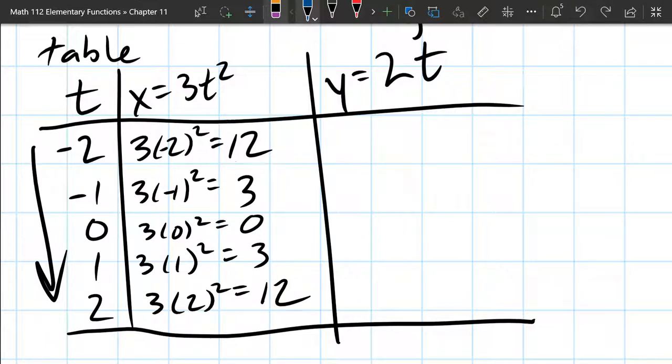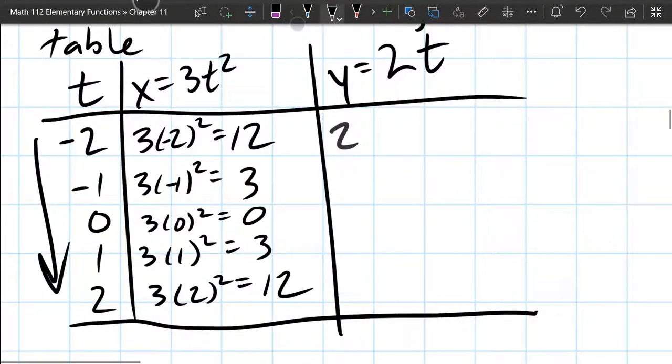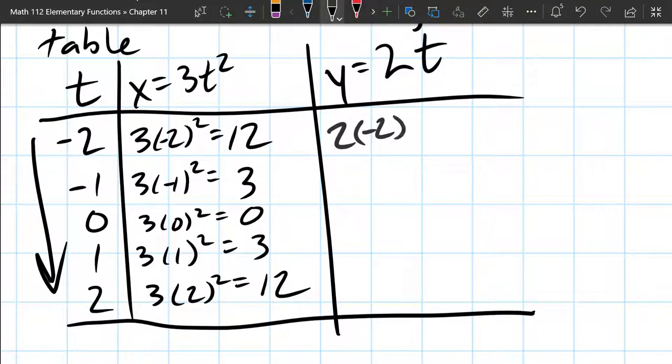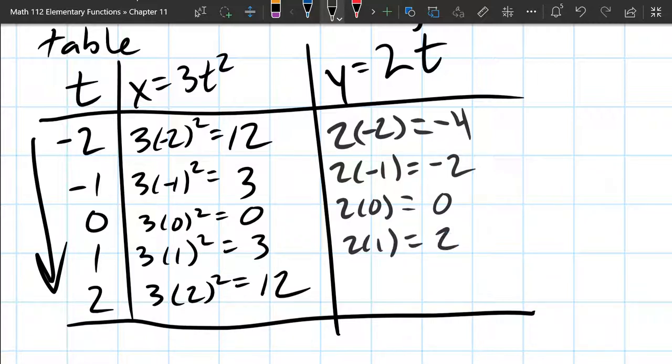So we're going to compute the y values now. All I'm going to do is take the t value and multiply by two. That's what 2t means. So we got two times negative two, that's negative four. Next we got negative one. Two times negative one is negative two. And two times zero is zero. Two times one is two. And two times two is four.